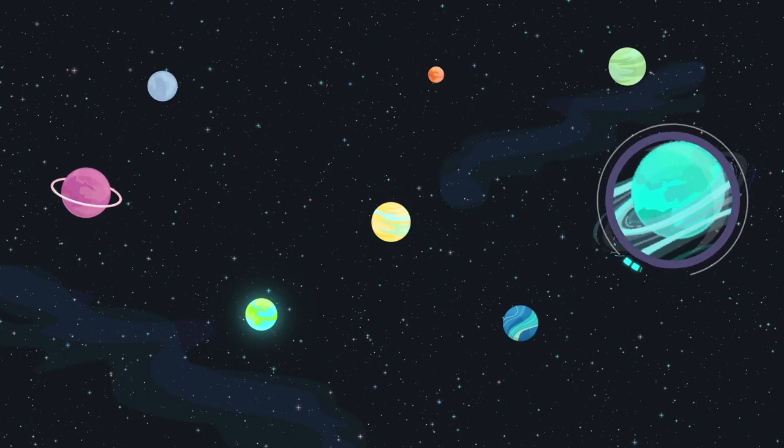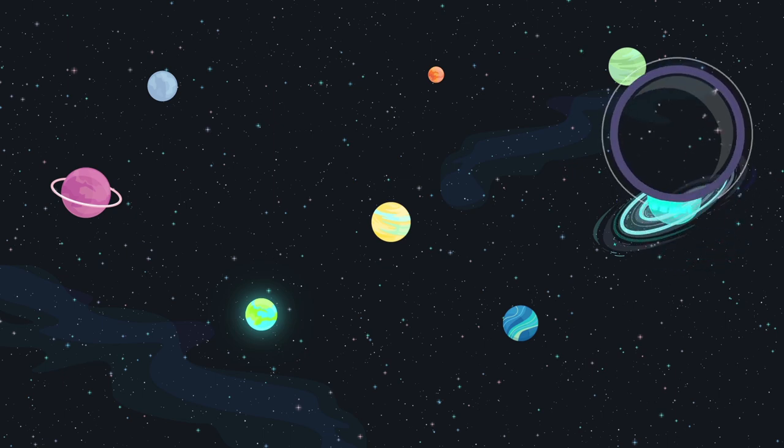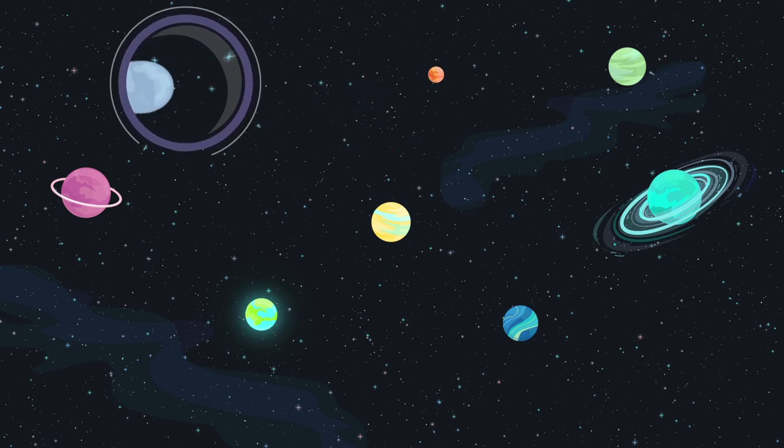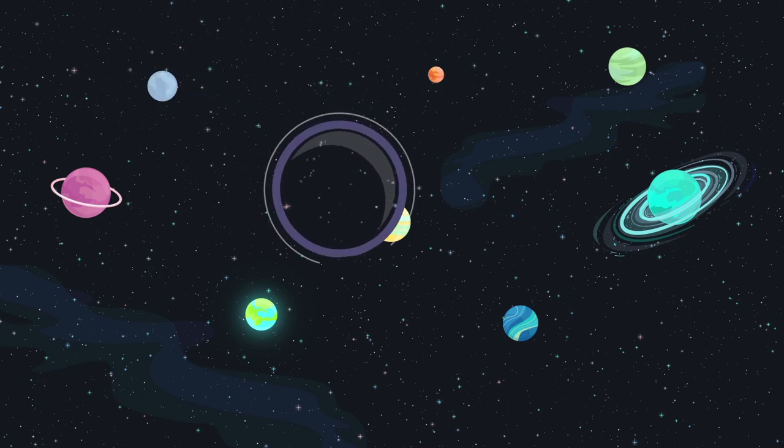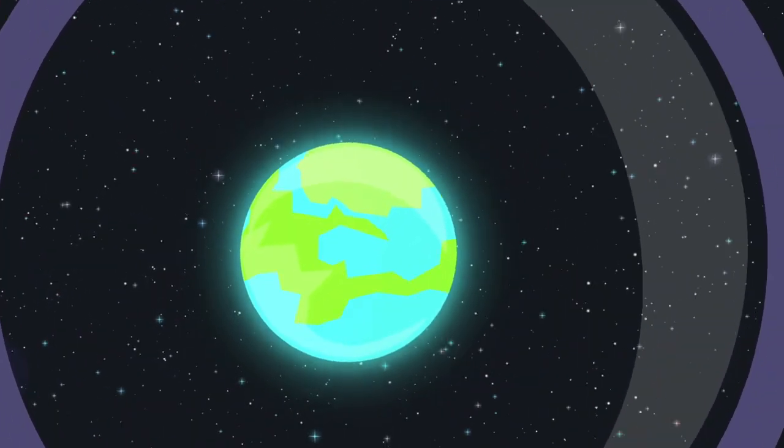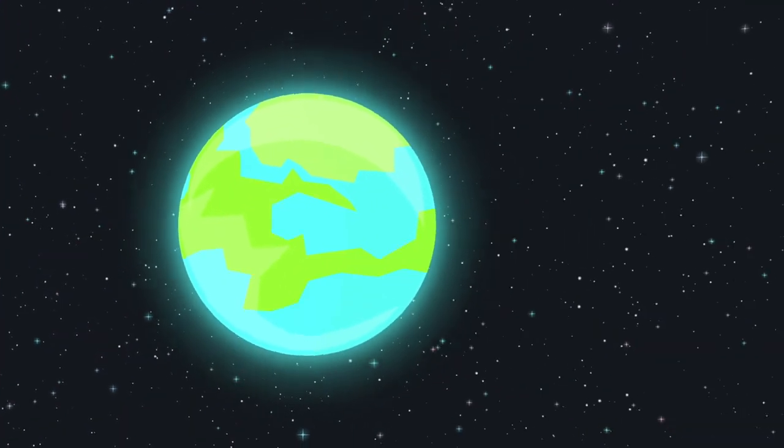The search for habitable places in our solar system and planets around other stars is a big part of astrobiology, the study of whether extraterrestrial life exists, and if so, how we might find it. There are a couple different ways we could soon discover extraterrestrial life.